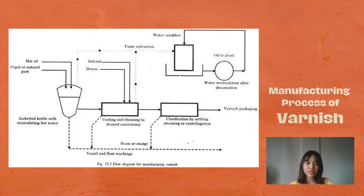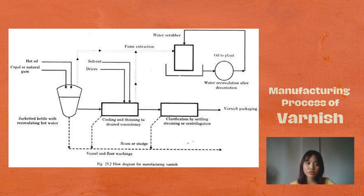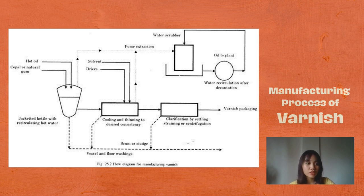The manufacturing process of varnishes involves several key steps, though specific methods and ingredients vary depending on the desired properties. The first step is raw material selection — common components include oils such as linseed oil, soybean oil, or tung oil; resins such as alkyd resins or acrylic resins; solvents like mineral spirits or turpentine; and additives such as drying agents, UV stabilizers, and pigments for colored varnishes. The second step is mixing and heating, where the selected oils and resins are mixed in precise proportions and then heated to a specific temperature in a reactor to promote polymerization and create a more stable and durable product.